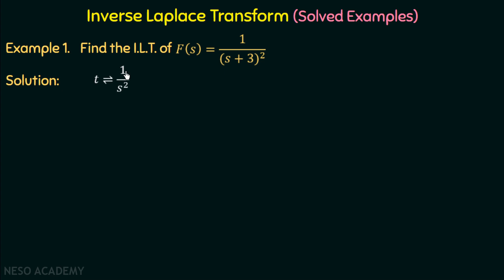The inverse Laplace transform of 1 over s square is t, since the Laplace transform of t is 1 over s square. Now f equals 1 over (s+3) whole square. Comparing this with 1 over s square, we can clearly say this function is a frequency-shifted version of 1 over s square, so we can easily calculate its inverse Laplace transform using the frequency shifting property.